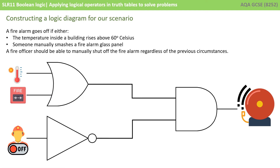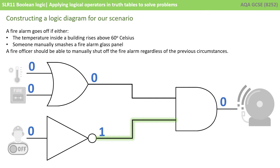I've created the logic diagram here for our scenario and let's work through it carefully to check that everything in the scenario is correct and that this logic diagram actually behaves as we expect. I've changed the colour of the various images here to black and white, which indicates that that input or output is currently off or not active, represented by zero. So this is our initial state.